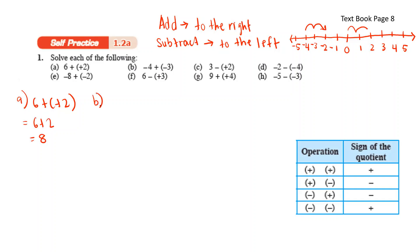B: negative 4 plus negative 3. Positive and negative, you get negative, which means negative 4 minus 3. Since subtraction moves to the left, from negative 4: negative 5, negative 6, and negative 7. So the answer is negative 7.